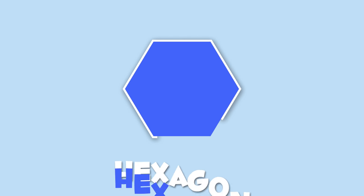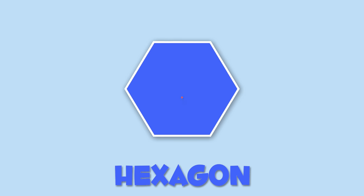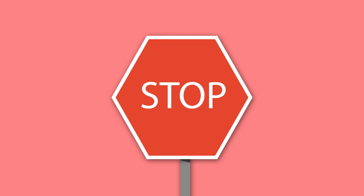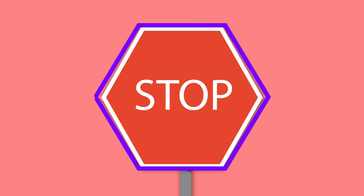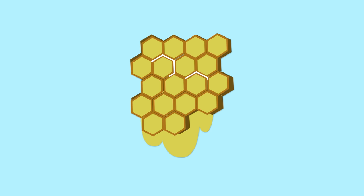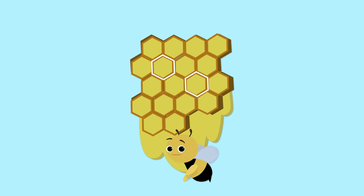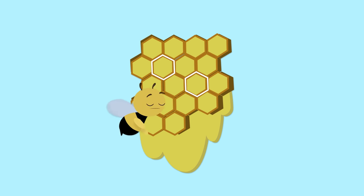Finally, I'll show you the hexagon. Hexagons have six sides. A hexagon is like this stop sign, or like this beehive. We better go now — bees are getting angry.